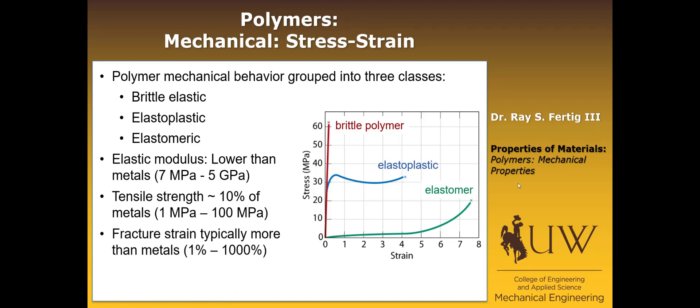The property that's significantly more than metals is the fracture strain, or the strain to failure, and it's going to range from maybe 1% all the way up to 1,000%. Those are the differences between polymers and metals in terms of properties, but there's one other really important way in which these properties differ, and that's that mechanical properties of polymers are going to be highly temperature sensitive in a way that we just didn't see in metals or care about.